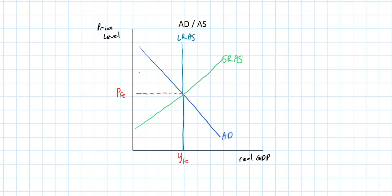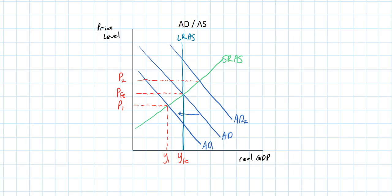Changes in AD or SRAS can cause changes in the equilibrium level of output. For example, a fall in aggregate demand would, in the short run, cause a decrease in real GDP to Y1 and a decrease in the price level to P1 — this is known as a recession because output is now below the full employment level. If AD were to increase, we'd see output rise beyond full employment to Y2 and demand-pull inflation as prices rise to P2. Whenever a country is producing below or above its full employment level, it has either a recessionary gap or an inflationary gap.